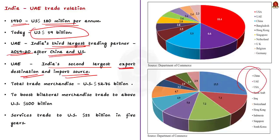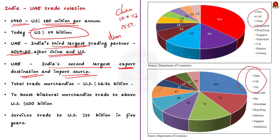The USA, followed by UAE and China, remained the top export destinations in April to November 2021. China, UAE, and USA were also the largest import sources for India in the same period. China's share in imports reduced to 15.5% from 17.7% in the corresponding period a year earlier, reflecting the increasing diversification of India's import sources.